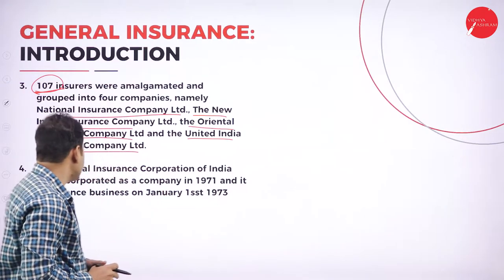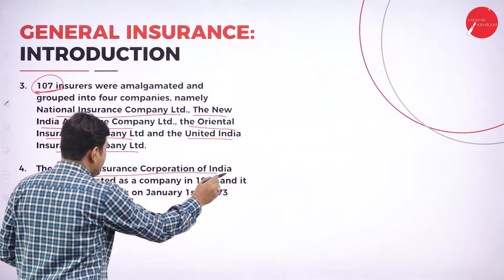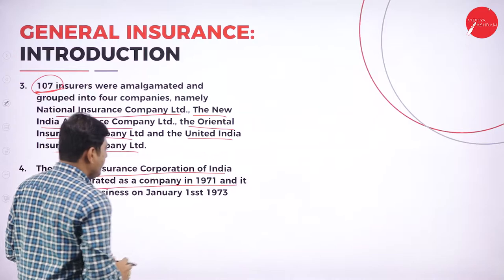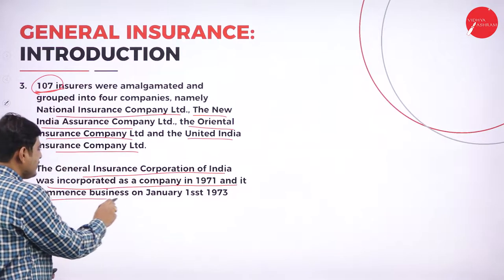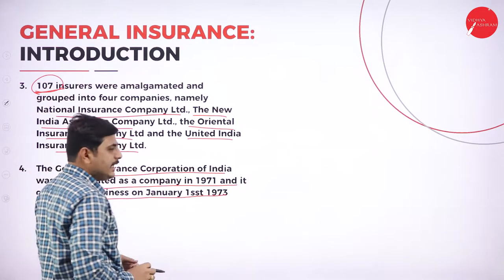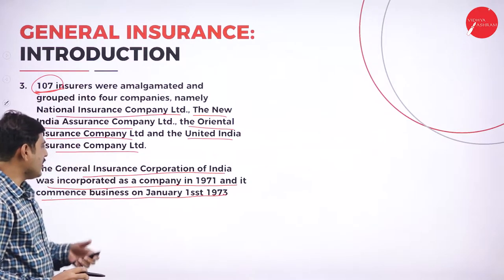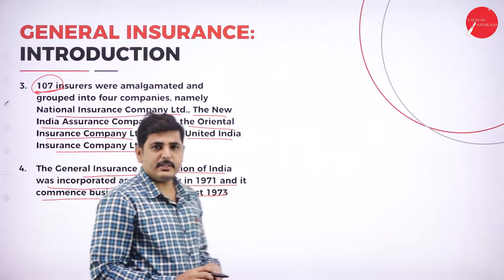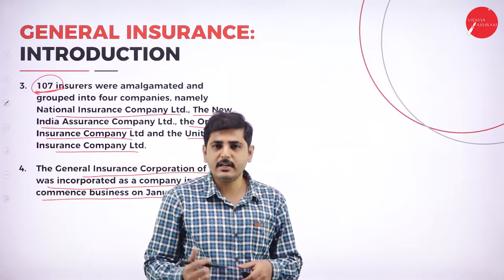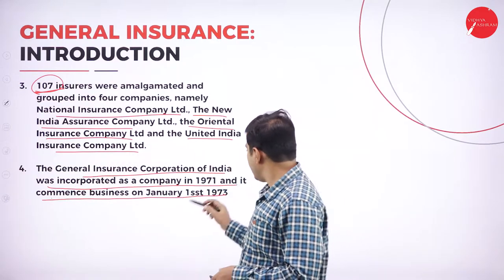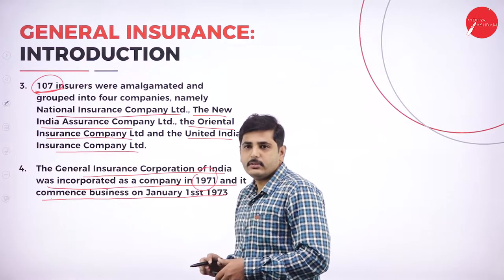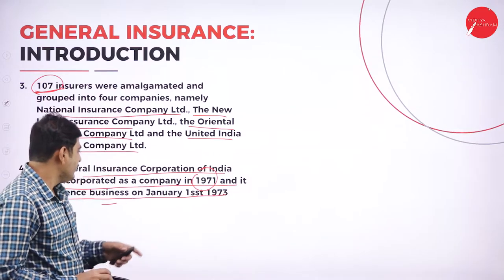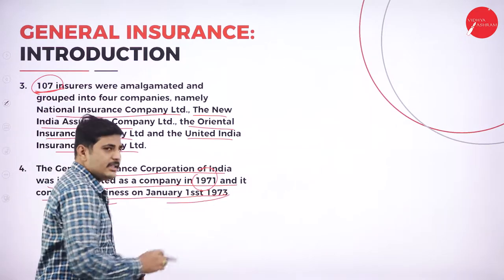The General Insurance Corporation of India was incorporated as a company in 1971 and commenced business on January 1st, 1973. This company was established and registered under the Government of India in 1971 and commenced business from January 1st, 1973.